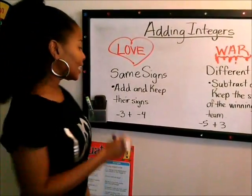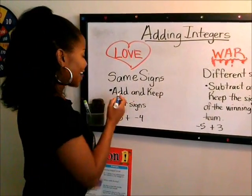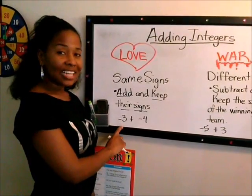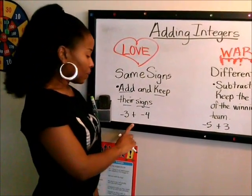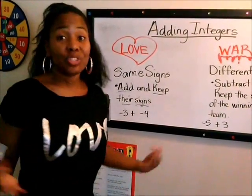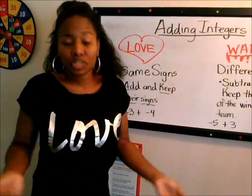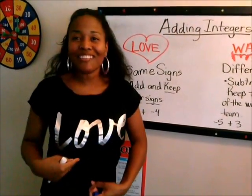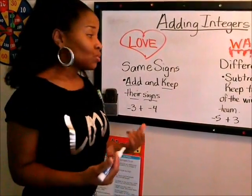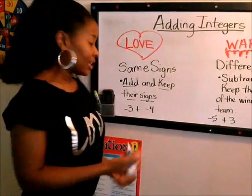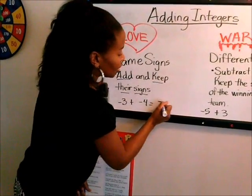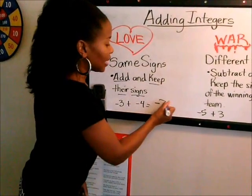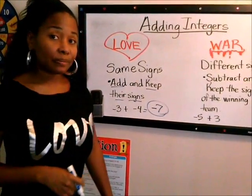The rule is simply add and keep their signs. So if you have negative three plus negative four, I have two negative numbers — there's lots of love going on, that's where I wore my love shirt for today. All we do is keep their signs; they're both negative. So negative three plus negative four gives me negative seven.